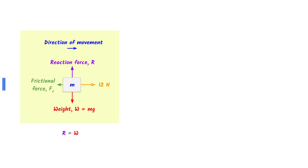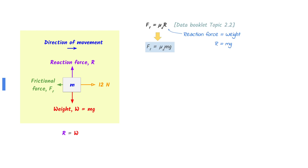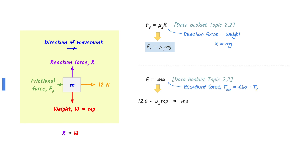Here is the free body diagram of the moving mass. Since there is no vertical acceleration, the upward reaction force equals the downward weight. Use the equation given in the data booklet to find the equation for frictional force. Substitute in the reaction force for weight. To find the coefficient of dynamic friction, use Newton's second law. The resultant force here is the pulling force minus the frictional force. Rearrange to make the coefficient of dynamic friction the subject, then put in the numbers and calculate to find your answer.